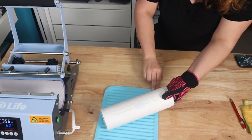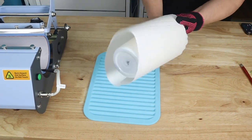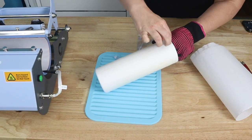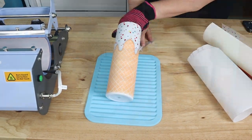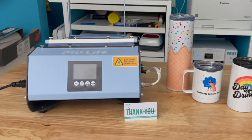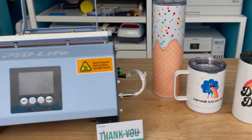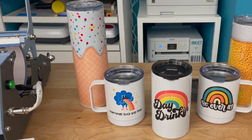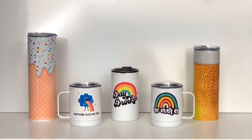So now we're going to do the 30 ounce tumbler. We did the same thing. 60 seconds one side, flipped it, another 60 seconds. And look at how everything turned out. This was so easy to use for sure. Now that we've given it all a try, we can say for sure that we are impressed with this tumbler press.